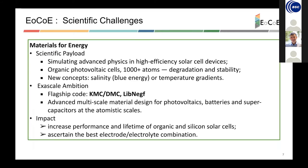Materials for energy is related to several different areas. For example, new materials for solar cells — both organic and inorganic — with the possibility of simulating more than 1000 atoms, including perovskite cells. The two flagship codes are KMC and LIV-LEGEF. This has applications to photovoltaics, but also to capacitors, supercapacitors, batteries, and even other areas such as blue energy — that is, energy obtained from salinity gradients and even temperature gradients.